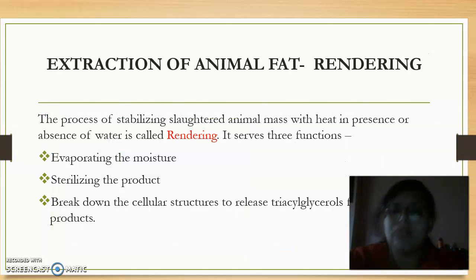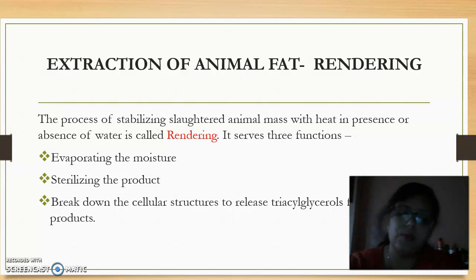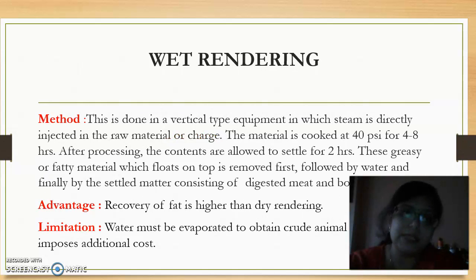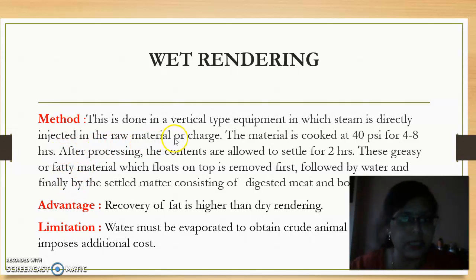Since we are talking of extraction of edible oil, let us also talk about the extraction of animal fat, which is known as rendering. Rendering is a process of stabilizing animal fat with heat in the presence or absence of water. If it occurs in the absence of water, it is called dry rendering. If it occurs in the presence of water, it is called wet rendering. In wet rendering, steam is directly injected into the raw material at 50 psig for 4 to 8 hours.